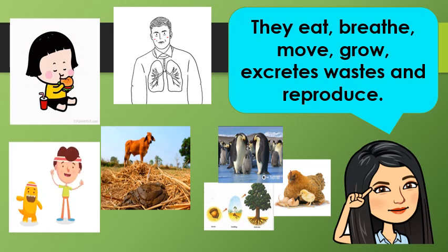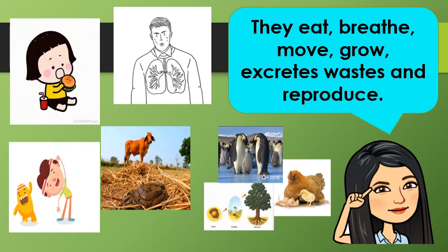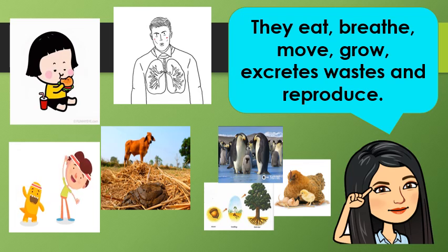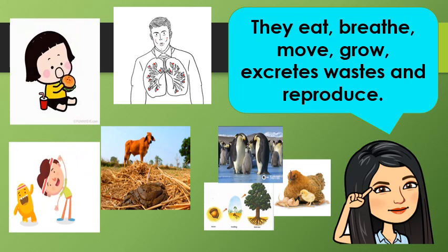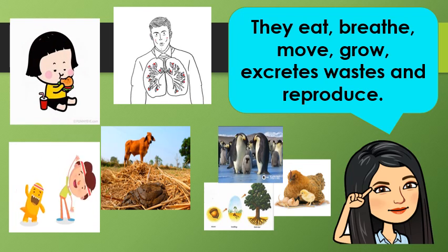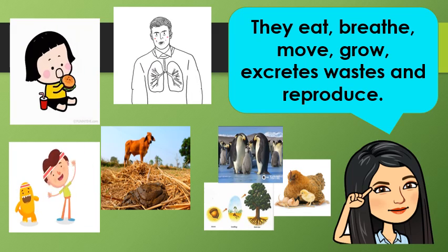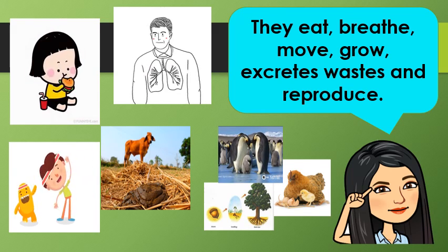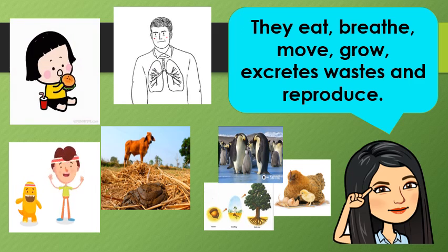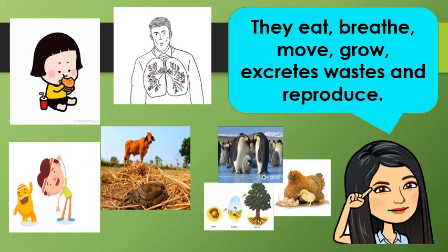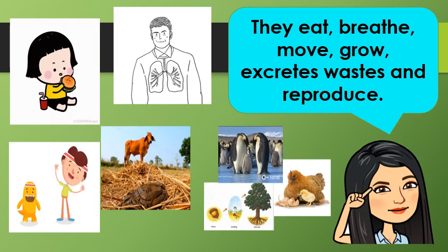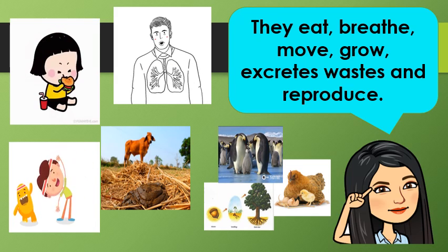For the animals, we have the carnivore — those animals that only eat meat; herbivores — those animals that only eat plants; and omnivores — those animals that eat both plants and animals. Plants, like animals, need food as well. They can make their own food through the process of photosynthesis.